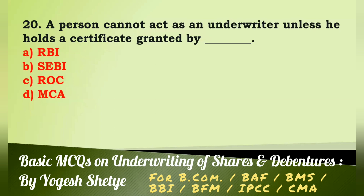Question 20: A person cannot act as an underwriter unless he holds a certificate granted by — (a) RBI, (b) SEBI, (c) ROC, (d) MCA. Answer: A person cannot act as an underwriter unless he holds a certificate granted by SEBI. Answer B.